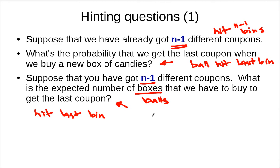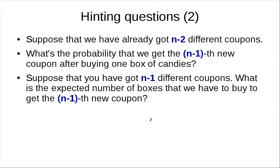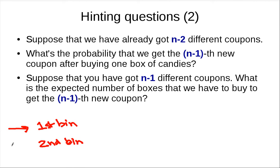You can ask the same questions going back one step: what's the probability of hitting the new n minus 1 coupon, and how many balls do you need to throw to hit the next new bin? And similarly for the first and second bin. If you keep asking this for each step, you may be able to come up with a way to analyze the expected value of X.